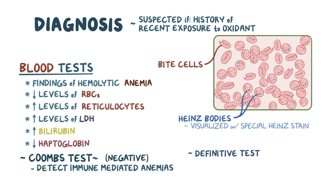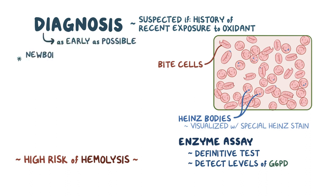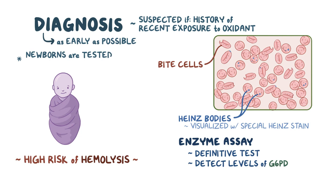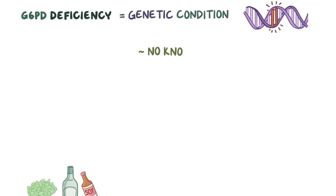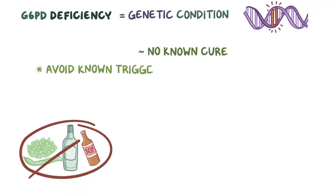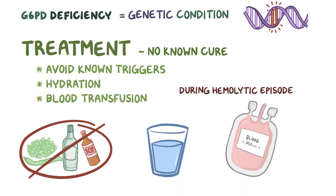The definitive test for G6PD diagnosis is an enzyme assay to detect the levels of G6PD. Given the high risk of hemolysis, it's important to diagnose G6PD deficiency as early as possible, so newborns in many developed countries are tested a few days after birth. Because G6PD deficiency is a genetic condition, there's no known cure other than avoiding known triggers. Treatment during a hemolytic episode includes hydration and blood transfusion that might be needed, depending on the severity of the hemolysis.